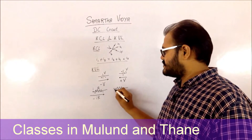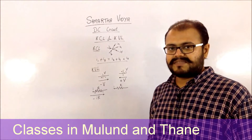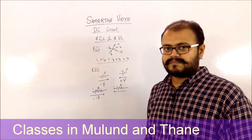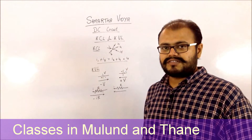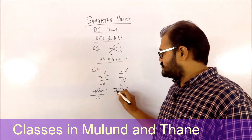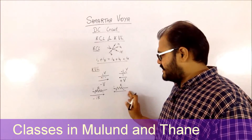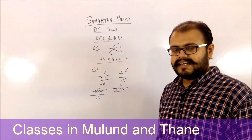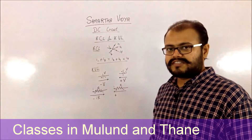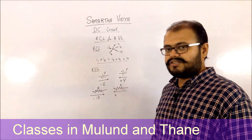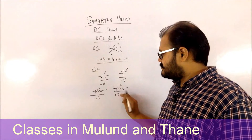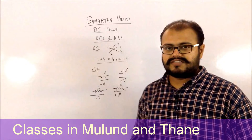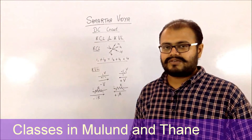Case 4: same resistor and same current direction, but now you traverse the loop in the opposite direction — going from negative to positive. Since you are going opposite to the flow of current, the drop is a positive drop because you are going from lower potential to higher potential, and the magnitude equals I times R. These are the four possibilities you will encounter while solving by KVL.